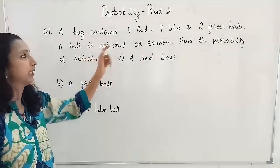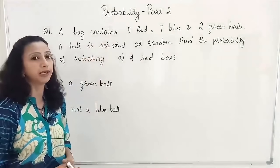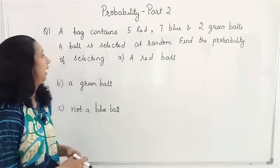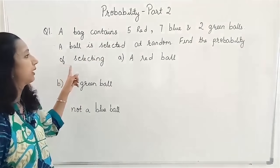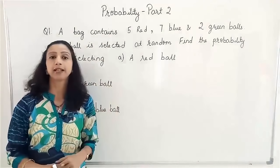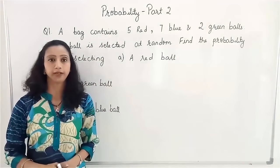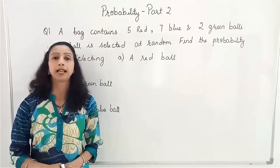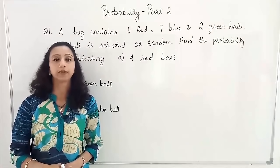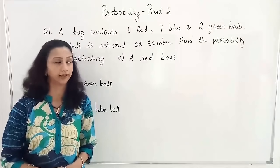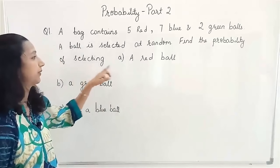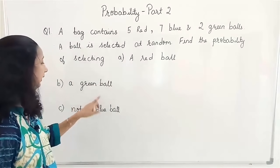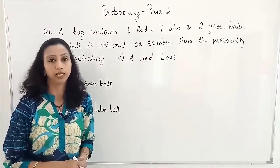A bag contains 5 red, 7 blue and 2 green balls. A ball is selected at random because this is a random experiment — any ball can be selected and all the balls have equal chances of getting selected. Find the probability of selecting: a red ball, a green ball, and not a blue ball.